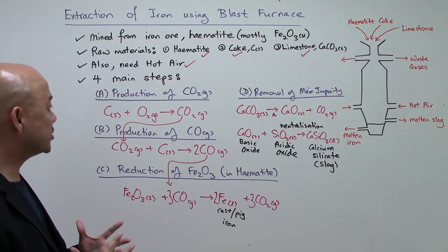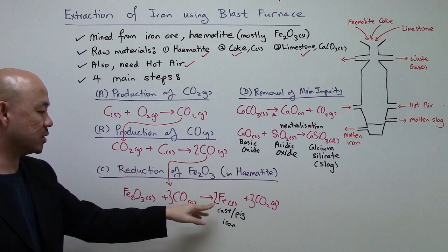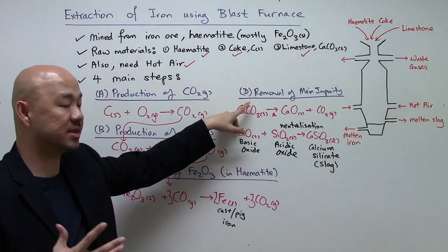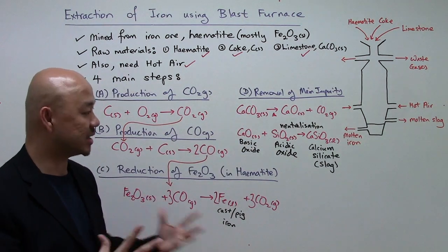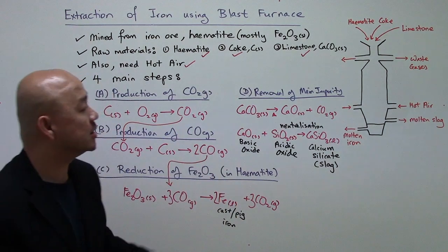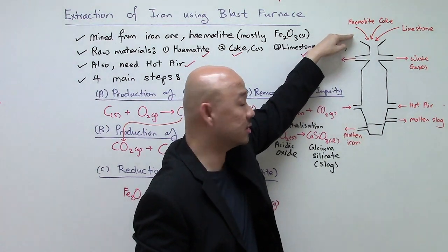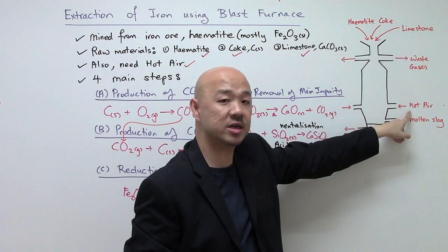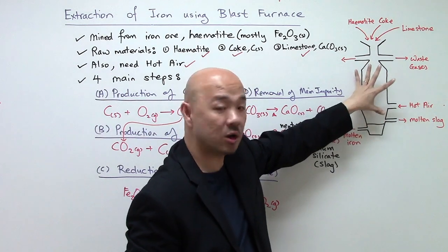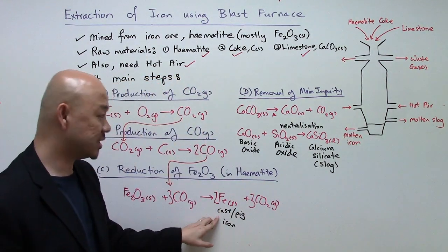In summary, there are four steps in total. The first three steps lead you to get your metal, which is iron. The last step is to remove the main impurity — silicon dioxide — through neutralization to form calcium silicate, or slag. The three raw materials added at the top and the hot air introduced near the bottom undergo chemical reactions, producing molten slag and molten iron as products.